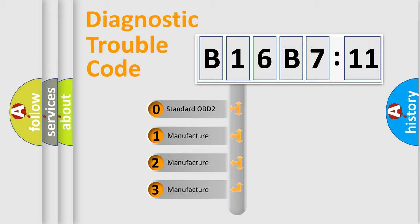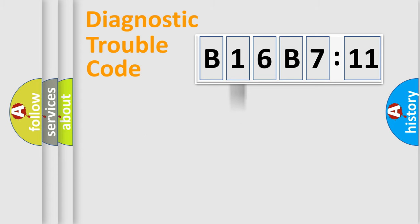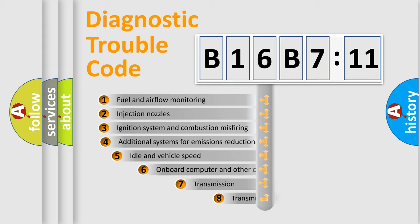If the second character is expressed as zero, it is a standardized error. In the case of numbers 1, 2, or 3, it is a more specific expression of the car-specific error.